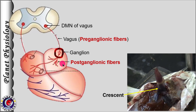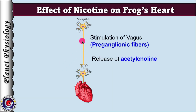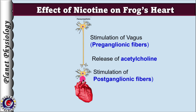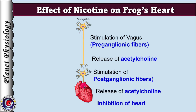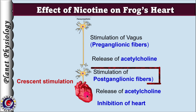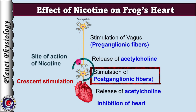When we stimulate the vagus, we activate preganglionic fibres, and these fibres release acetylcholine at the autonomic ganglion. This acetylcholine stimulates postganglionic fibres, which release acetylcholine on the heart, leading to its inhibition. When we stimulate the crescent, we directly activate postganglionic fibres, which release acetylcholine on the heart and inhibit it. So between the vagus and the crescent lies the autonomic ganglion, and nicotine acts on it.